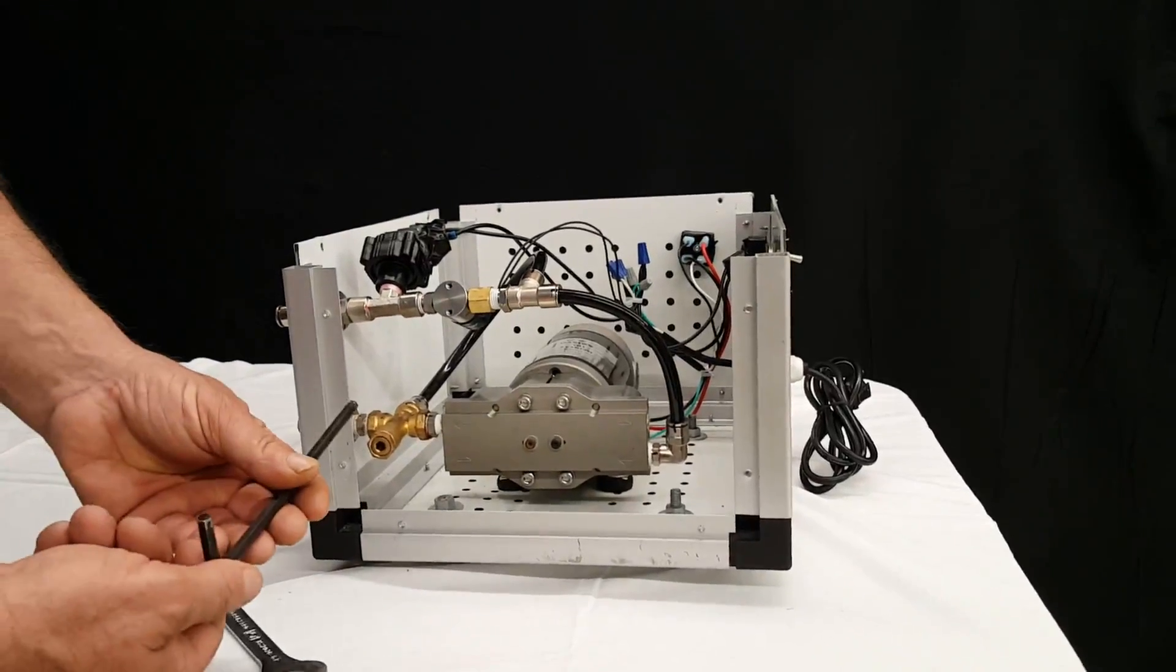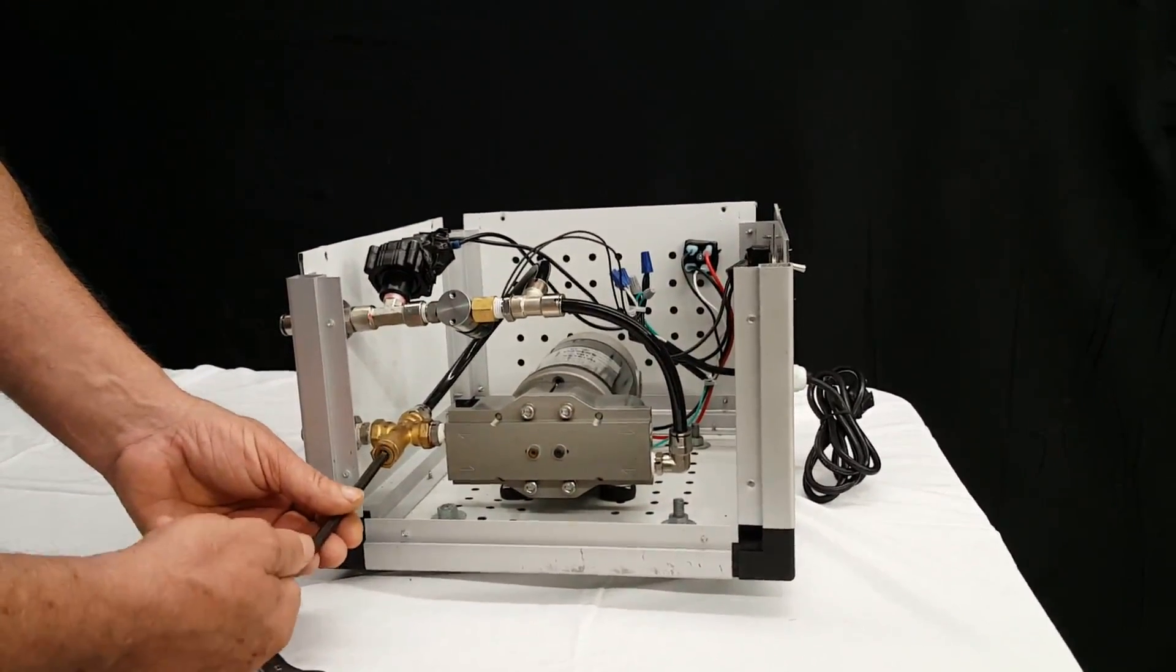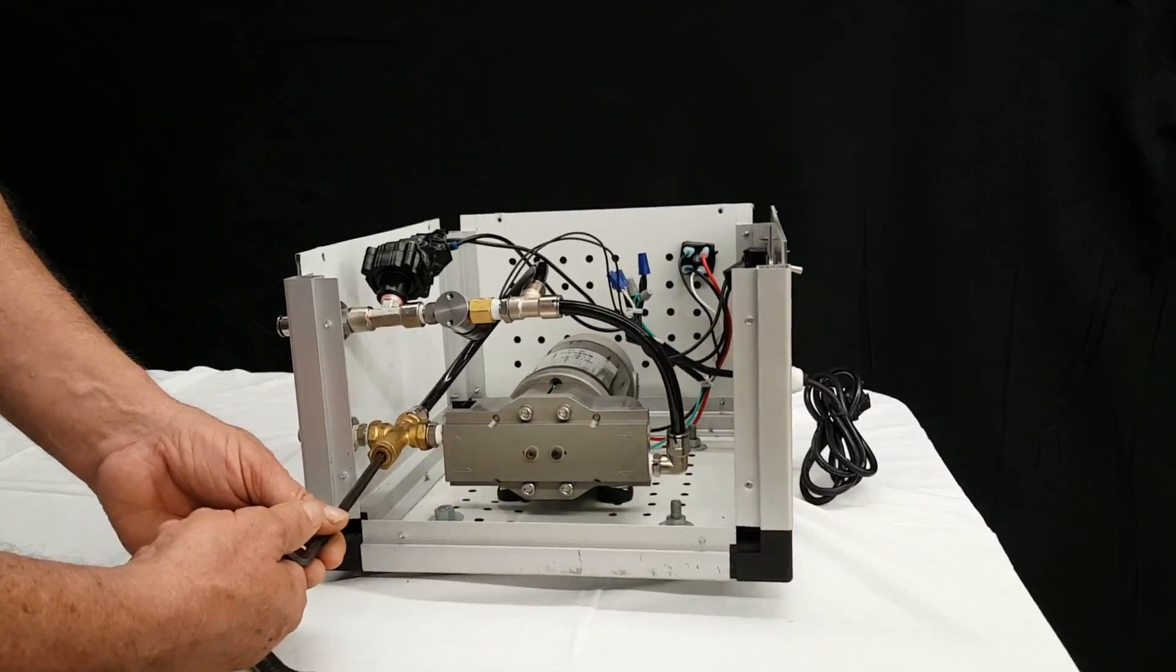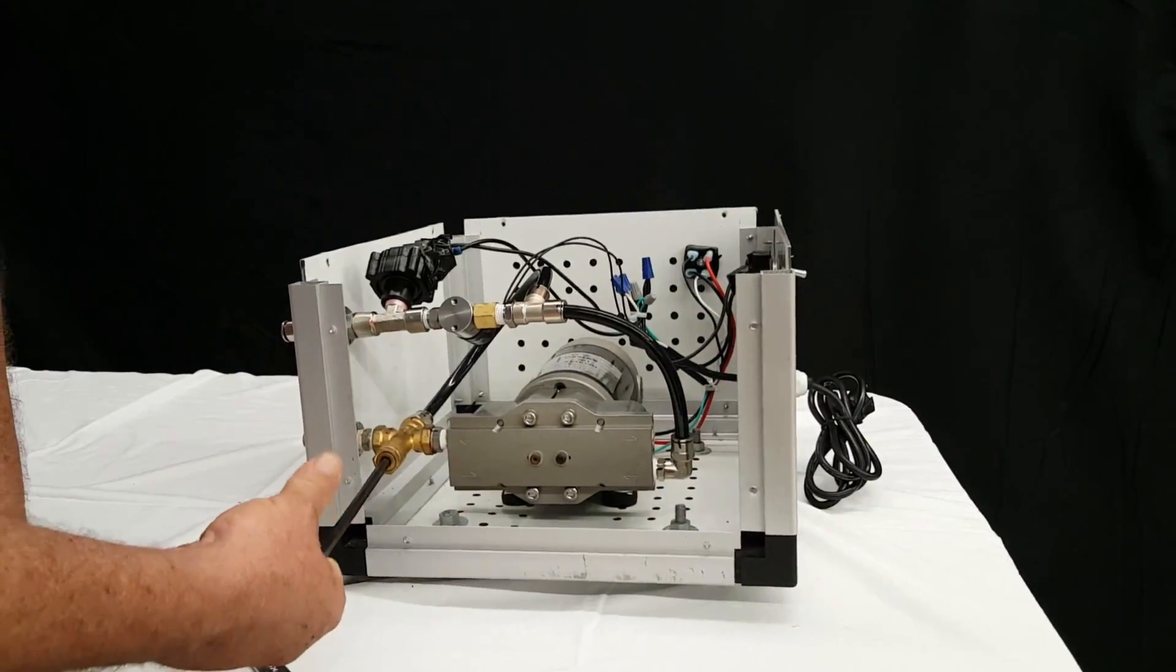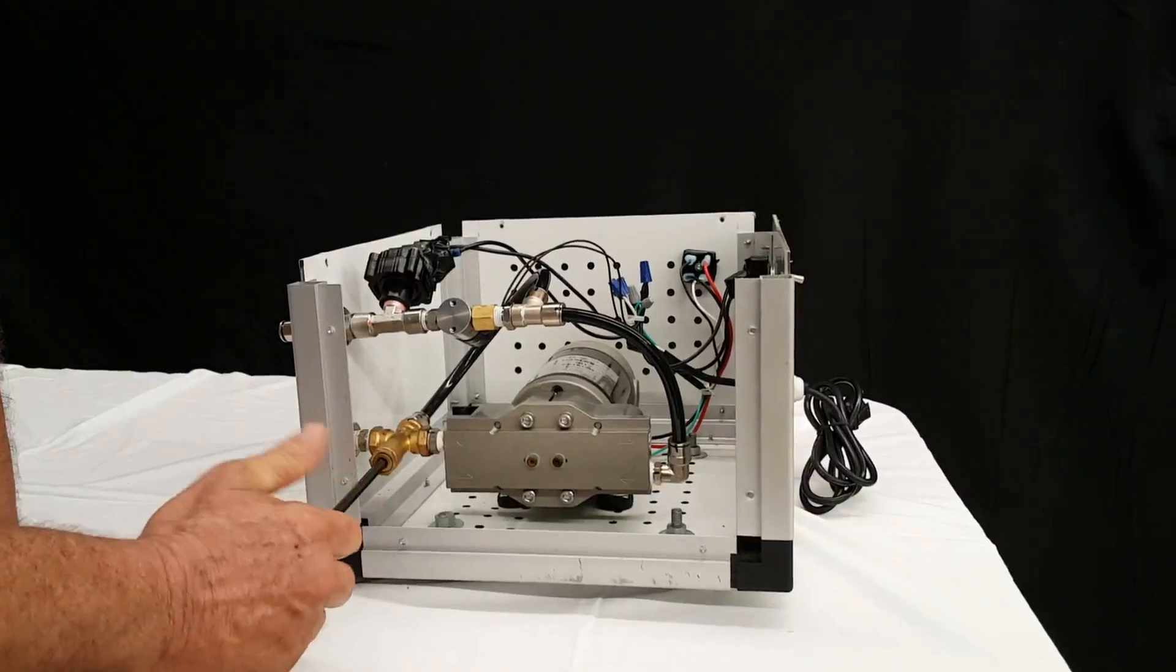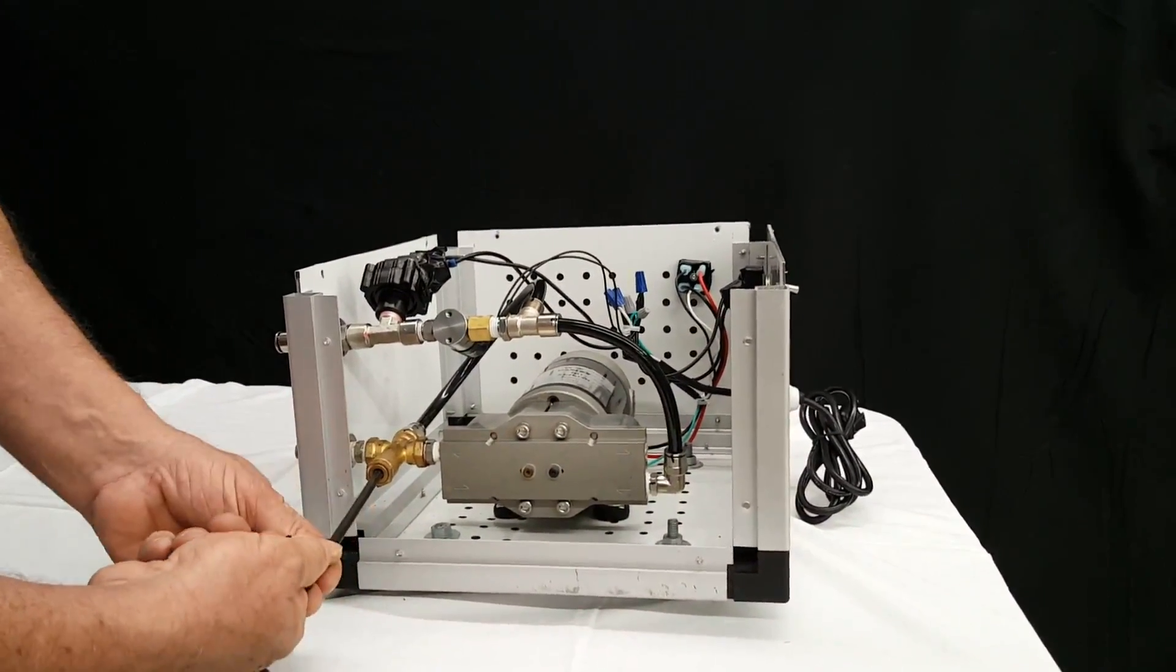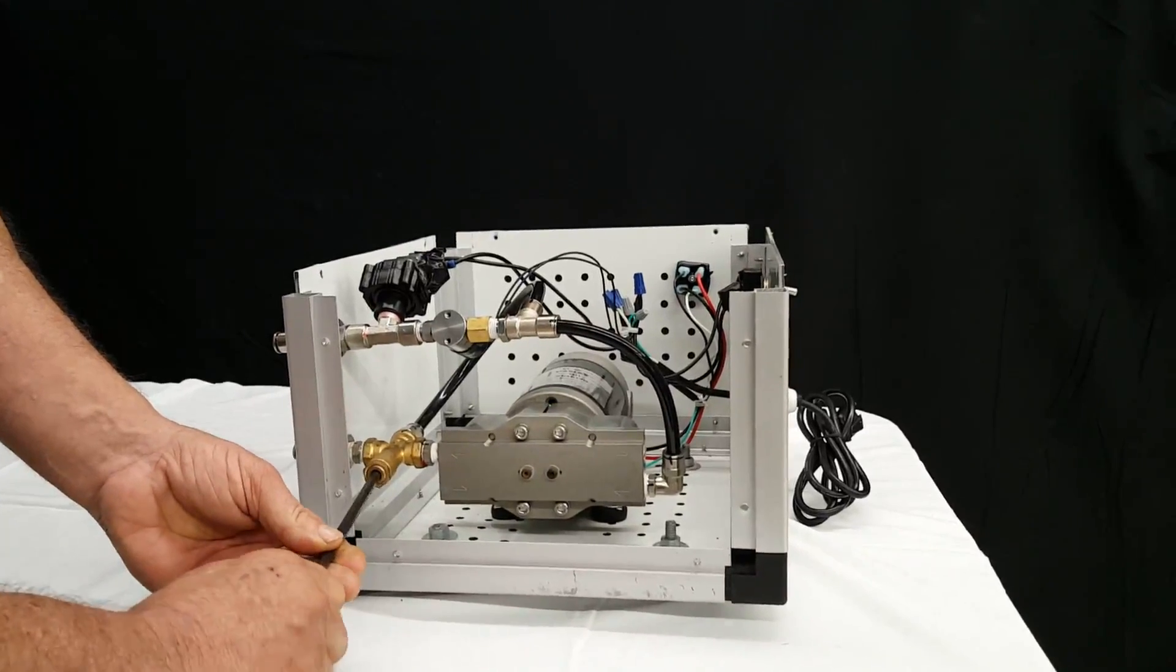Then take an Allen wrench, stick in the end of it, and you turn this clockwise. It will increase the pressure, and counterclockwise will decrease the pressure.